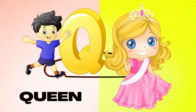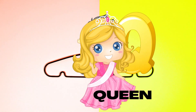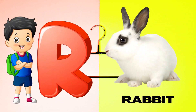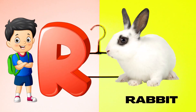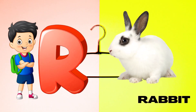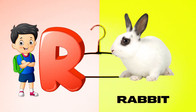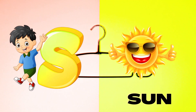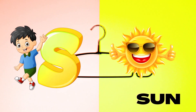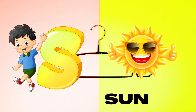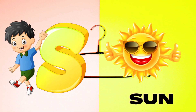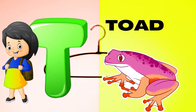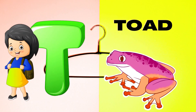Q is for Queen, Q-Q-Queen. R is for Rabbit, R-R-Rabbit. S is for Sun, S-S-Sun. T is for Toad, T-T-Toad.